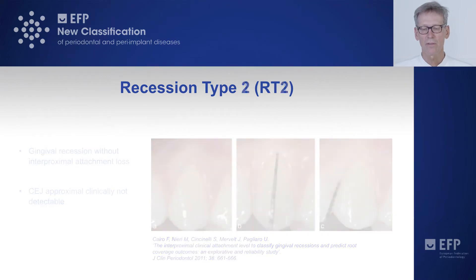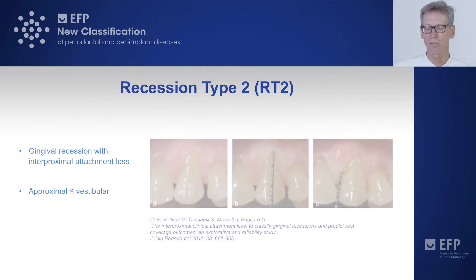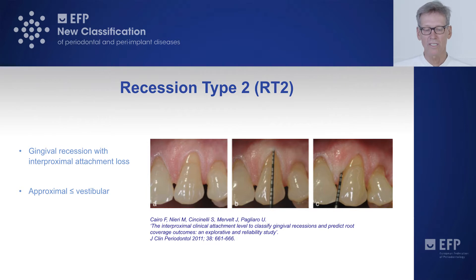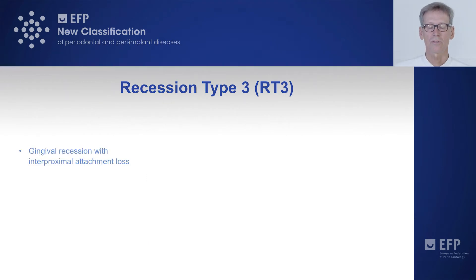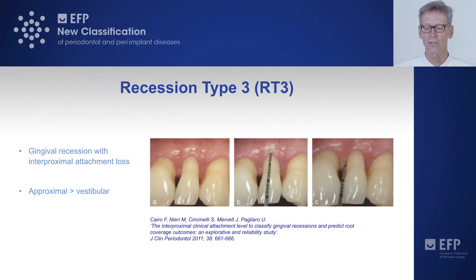Recession type 2 relates to recessions with interproximal attachment loss; however, the proximal attachment loss is equal to or smaller than the vestibular attachment loss. We must measure the attachment on both the vestibular and interproximal sides. The approximal attachment loss must be equal to or less than the vestibular one to classify this recession as type 2. Recession type 3 (RT3) represents the most advanced type — recessions with interproximal attachment loss where the approximal attachment loss is greater than the vestibular attachment loss, as indicated by probe measurements related to the CEJ.